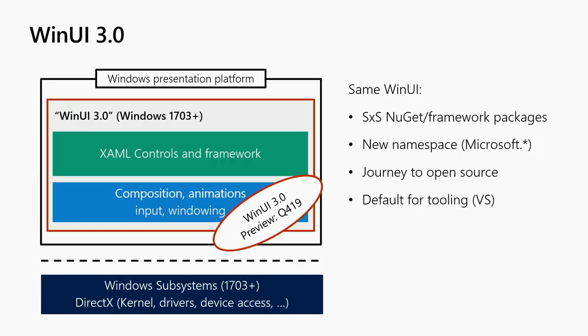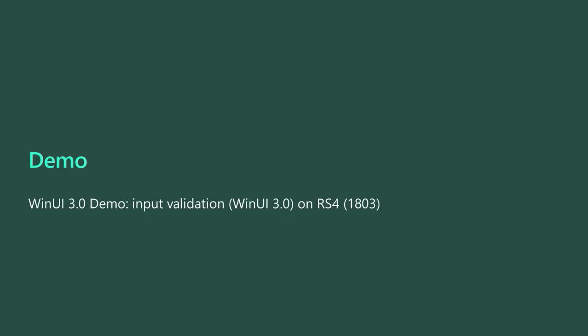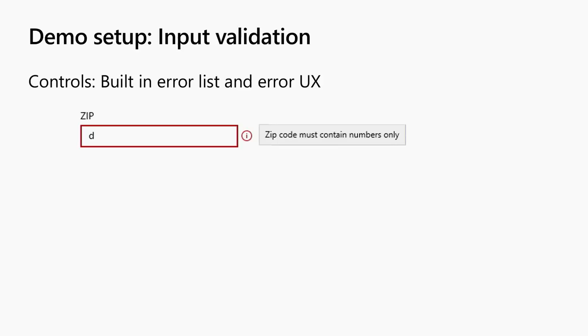I'm going to demo input validation, which is a new feature we're actively working on. For input validation, there are really two pieces. There is an error state visual for all our controls — we've added these error state visuals, backed by templates. As a developer, you can configure the error state: you effectively just set a control into an error state and it'll automatically pop the visual, and you can give it a list of error messages that will display in a little tooltip.